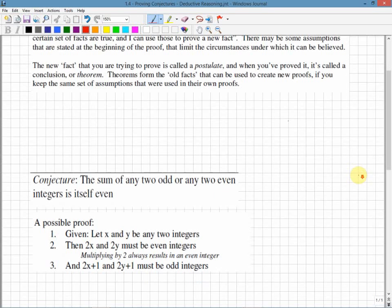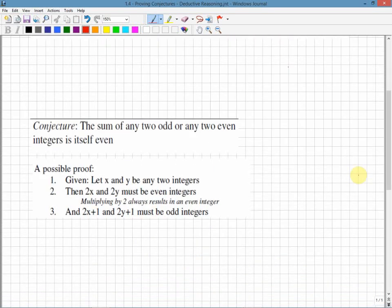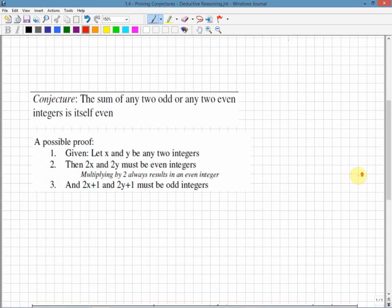A possible proof. So we're going to start off. Given. Let x and y be any two integers. That's fine. You can state that anytime. You're just using algebra. x is 1, y is a different one. Totally different numbers.